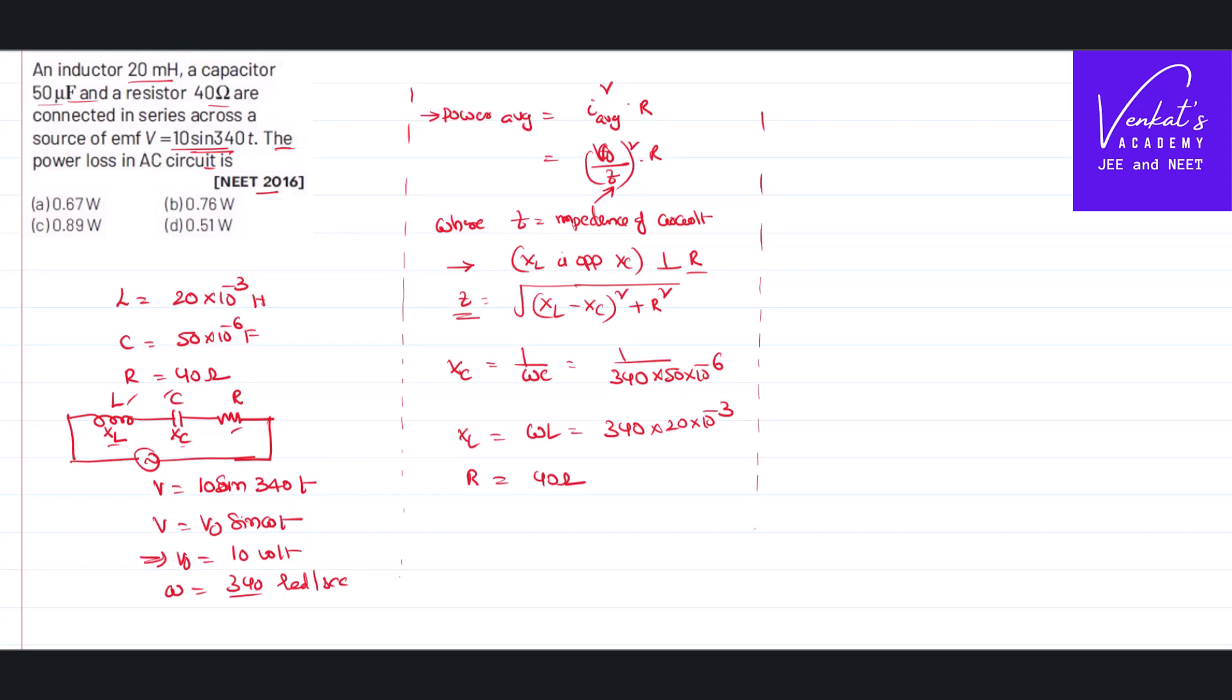Impedance Z equals the square root of [X_L (that is 340 × 20 × 10^-3) minus X_C (that is 1/(340 × 50 × 10^-6)), whole squared, plus R² (40²)].